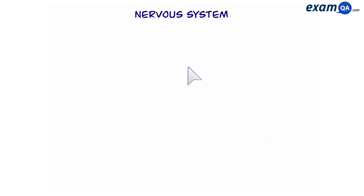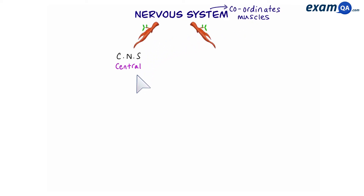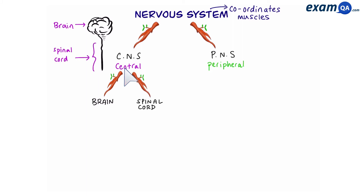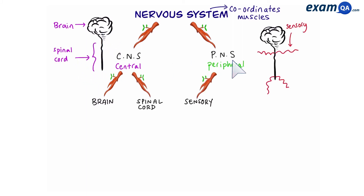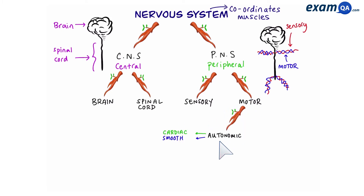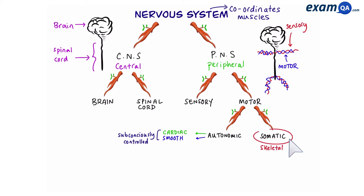One of the jobs of our nervous system is to coordinate our muscles. The nervous system has many layers. The first two branches are the CNS, which stands for central nervous system, and PNS, peripheral nervous system. The CNS is made of your brain and spinal cord, and the PNS is made of sensory and motor neurons connected to the brain and spinal cord. The motor neurons can be divided into autonomic, meaning motor neurons that attach to cardiac and smooth muscles which are subconsciously controlled, or somatic, which are connected to skeletal muscles where we have conscious control.